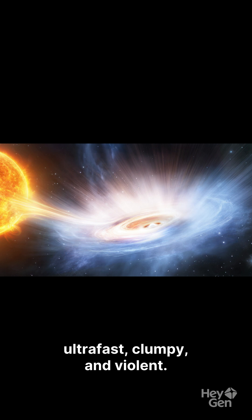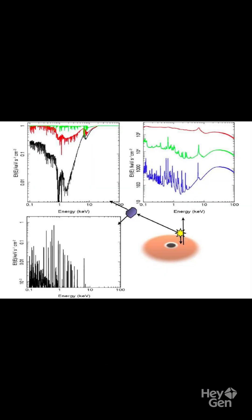Black hole winds are ultra-fast, clumpy, and violent. But here's the puzzle: both systems are at the Eddington limit, both are powered by radiation pressure, so why are they completely different?